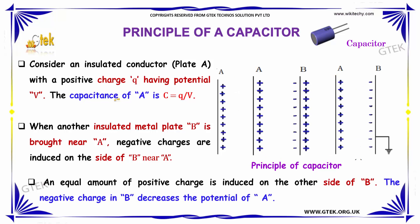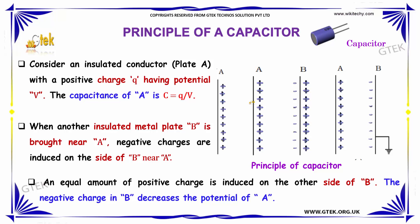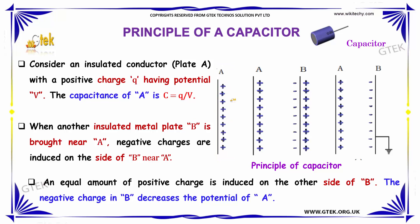Let's move on to the principle of a capacitor. Considering an insulated conductor which is plate A, with a positive charge as indicated, these positive charges give plate A a potential V. The capacitance of plate A is C equal to Q divided by V.